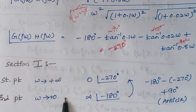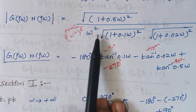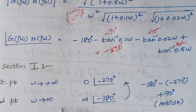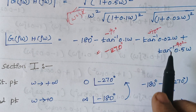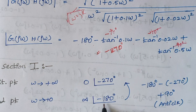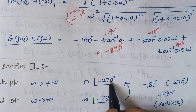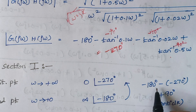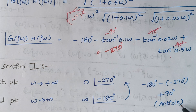Substituting ω = 0: magnitude = ∞, and tan⁻¹(0) = 0 for all terms, giving an angle of −180°. The angle of rotation is −180° − (−270°) = +90°. The positive sign indicates anticlockwise rotation. So Section 1 starts at magnitude 0 with angle −270° and ends at magnitude ∞ with angle −180°, rotating 90° anticlockwise.